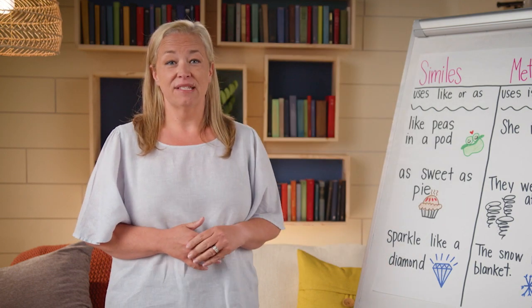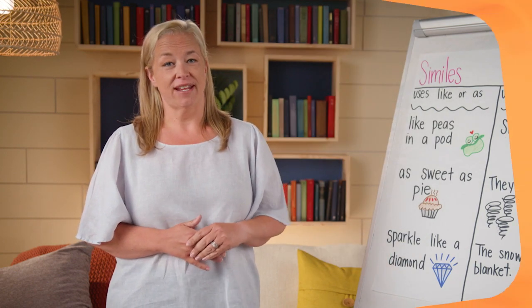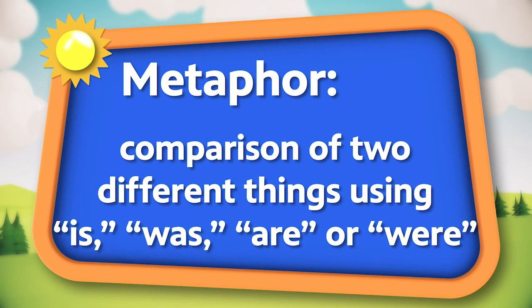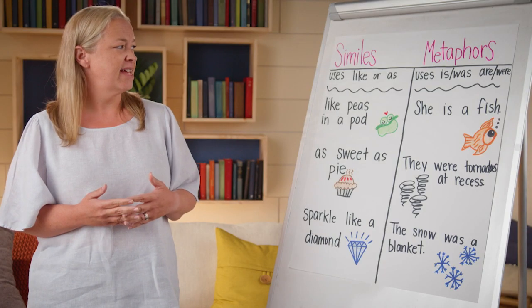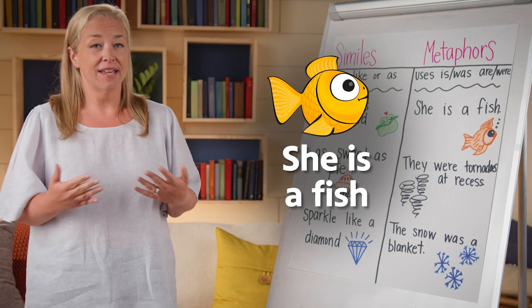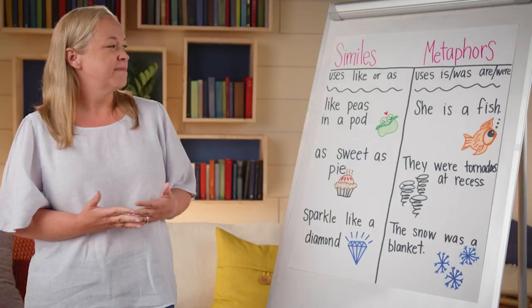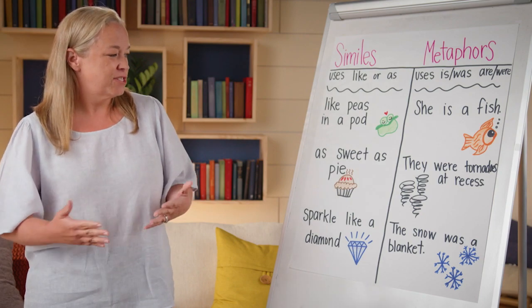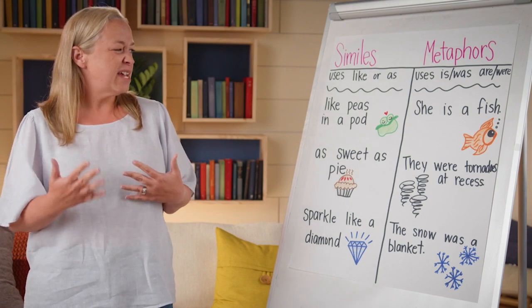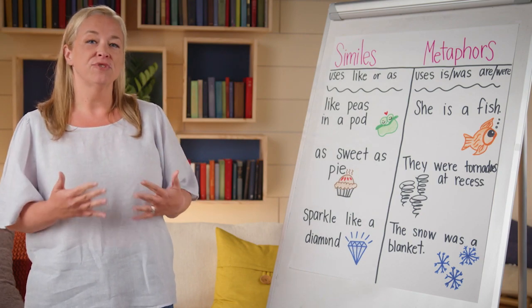A metaphor compares two different things using the words 'is,' 'was,' 'are,' or 'were.' Like 'she is a fish' — this means someone can swim really well or maybe they just love to be in the water. But they're not really a fish; it's just a way to play on words to make it more interesting.